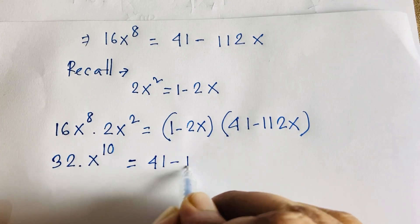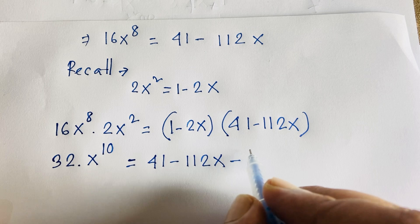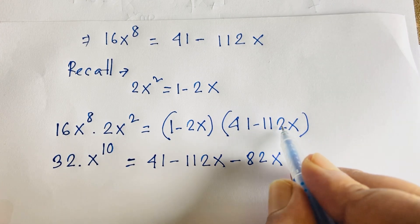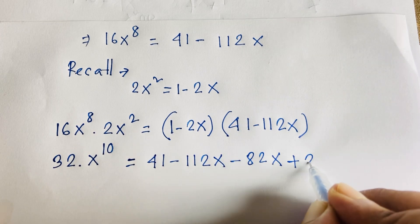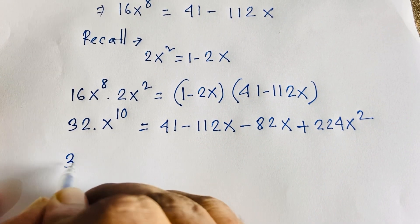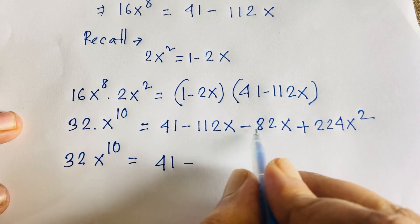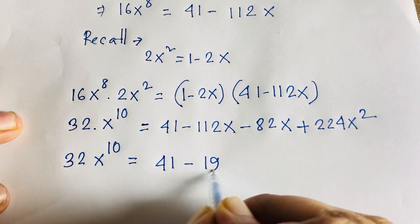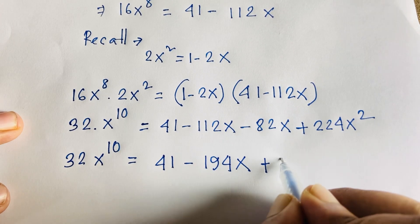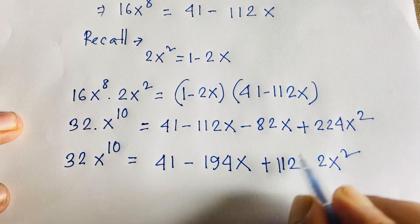Expanding (1 minus 2x)(41 minus 112x): 1 times 41 = 41, 1 times 112x = minus 112x, 2x times 41 = minus 82x, and 2x times 112x gives plus 224x². So 32x^10 = 41 minus 112x minus 82x plus 224x².